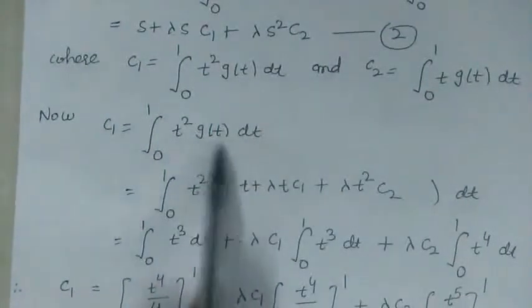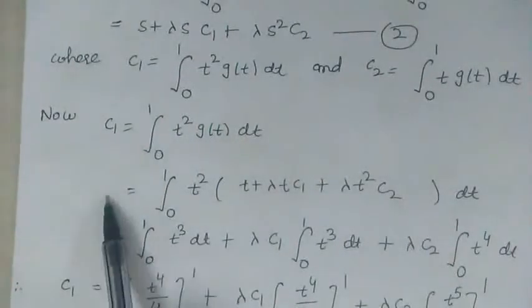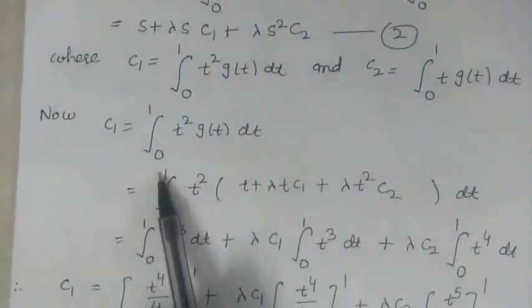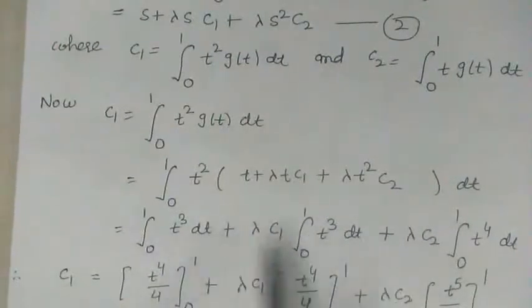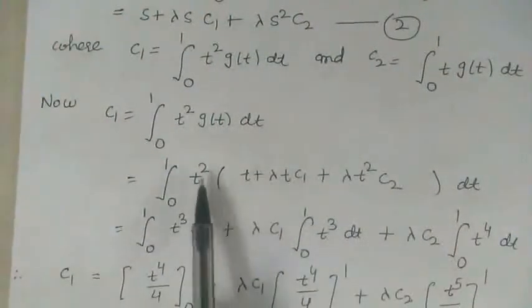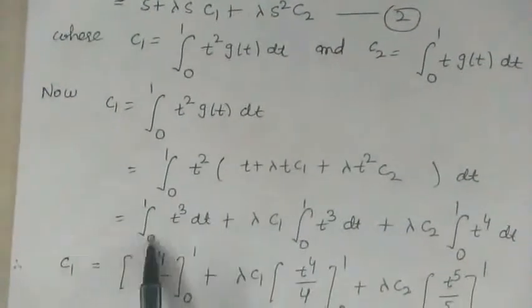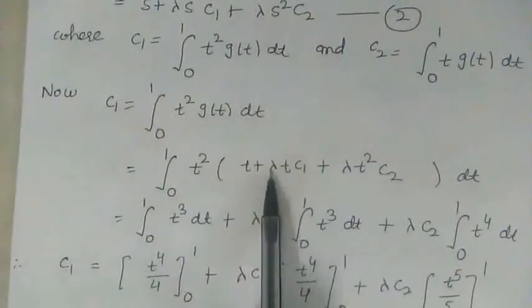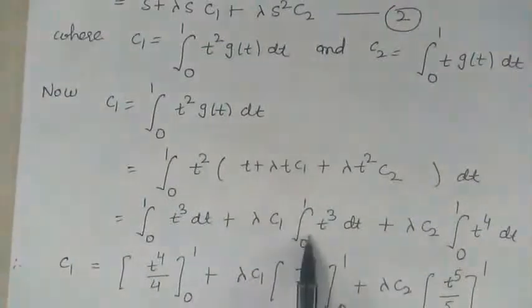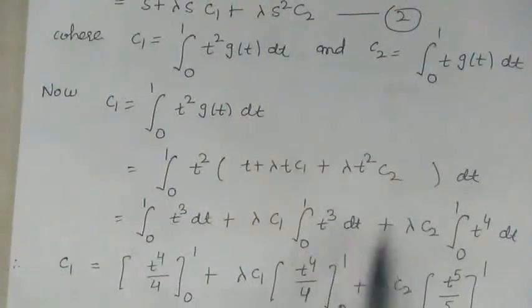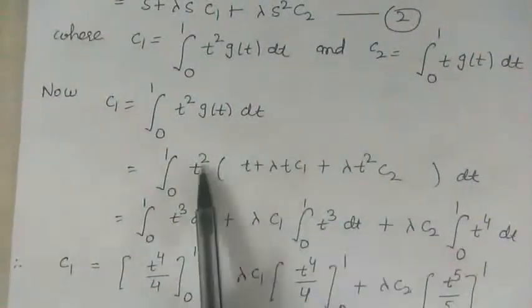Substituting the value of g(t) into c₁, we get c₁ = ∫₀¹ t² (t + λt c₁ + λt² c₂) dt. Multiplying and separating the terms: the first term is the integral of t³ from 0 to 1, next is λc₁ times the integral of t³ from 0 to 1, and then λc₂ times the integral of t⁴ from 0 to 1.